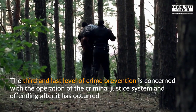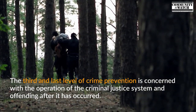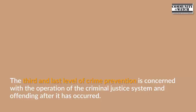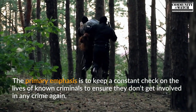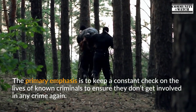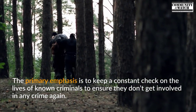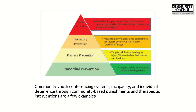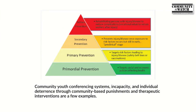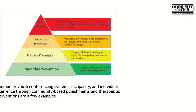The third and last level of crime prevention — tertiary prevention — is concerned with the operation of the criminal justice system and offending after it has occurred. The primary emphasis is to keep a constant check on the lives of known criminals to ensure they don't get involved in crime again. Community youth conferencing, incapacity, individual deterrence through community-based punishments, and therapeutic interventions are a few examples.